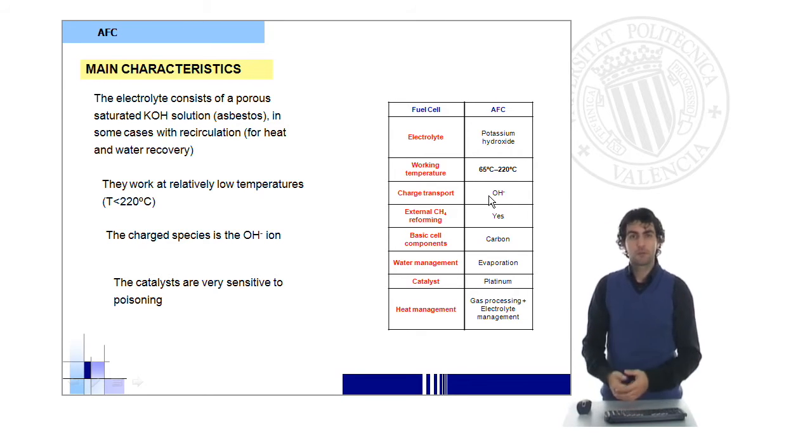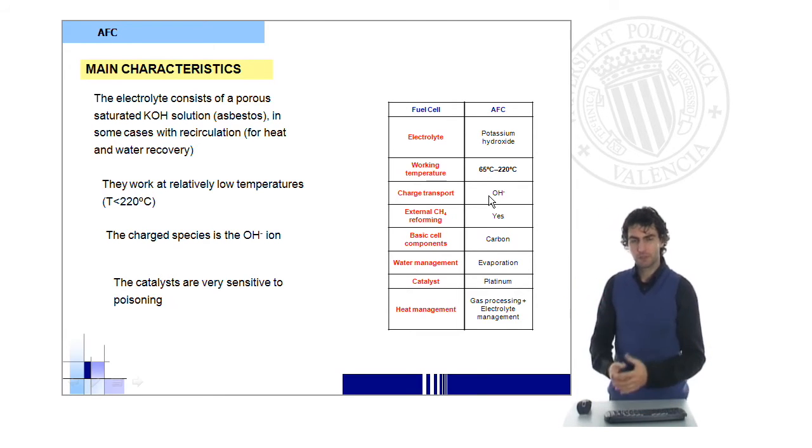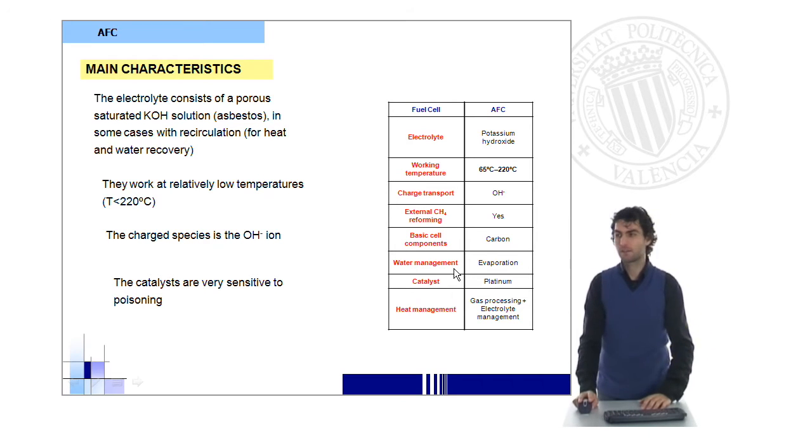AFC requires a very pure hydrogen stream for use at the anode. We have to deal with some problems related to evaporation of water. Because we use very low temperatures, we will need to use very expensive catalysts like platinum materials.